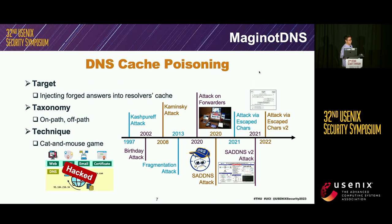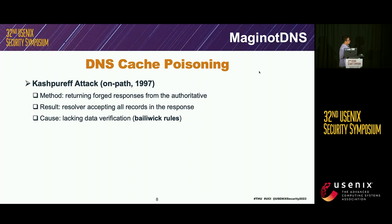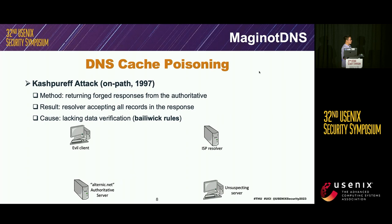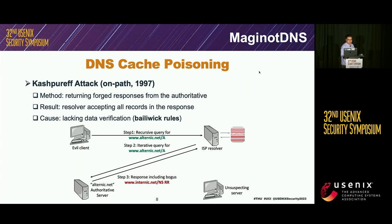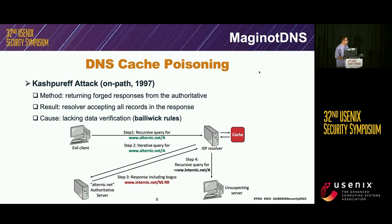DNS cache poisoning is like a cat-and-mouse game. Since it was disclosed, multiple attack techniques have been continuously developed. Here I will show a famous on-path attack named the cache snooping attack. It wants to inject some forged responses from its own authoritative server, by querying a domain for its own name server, then returning answers including fake inter-nic.net NS records.